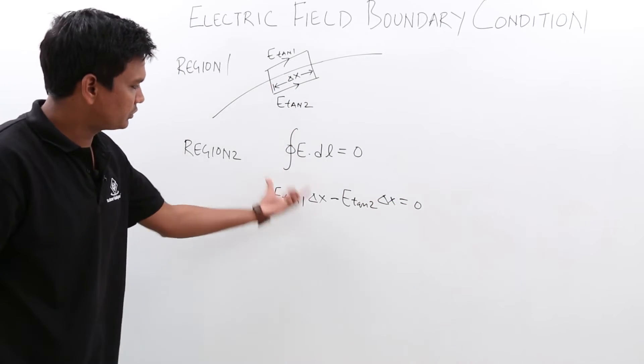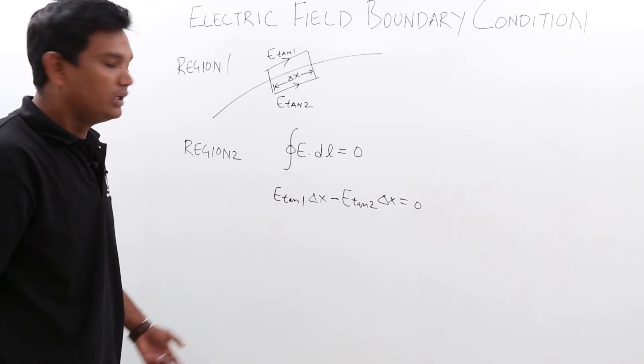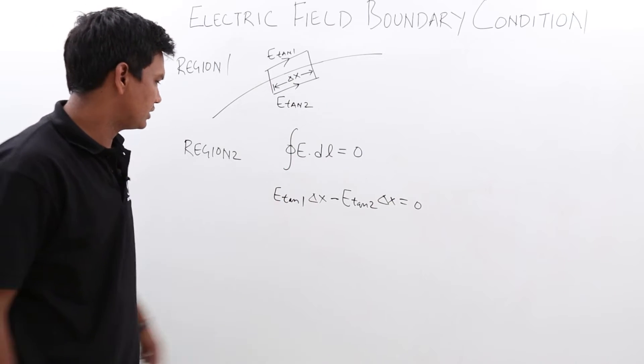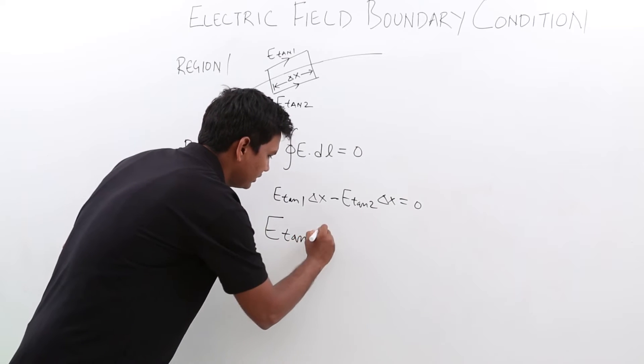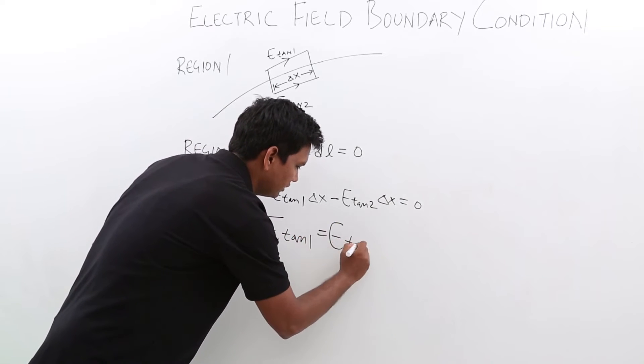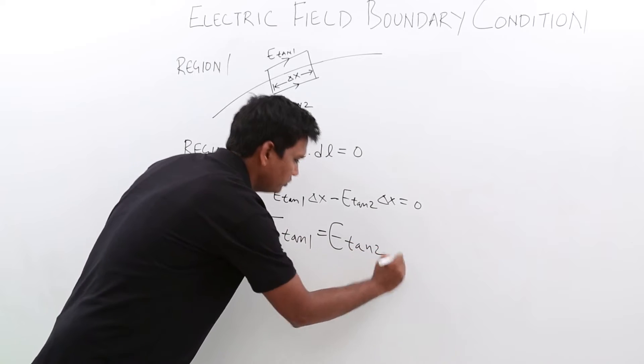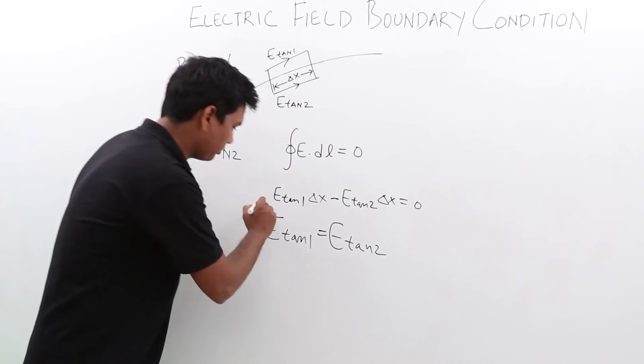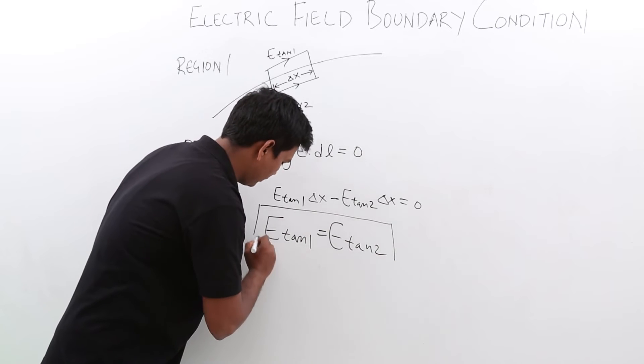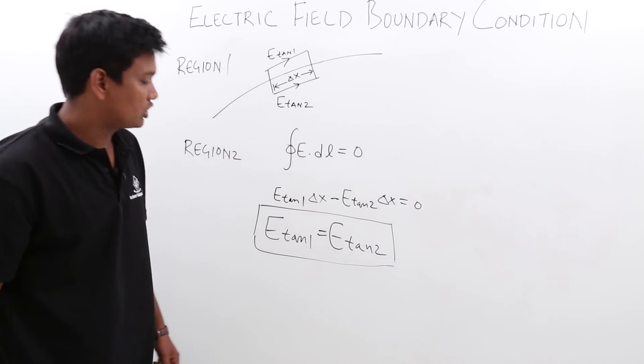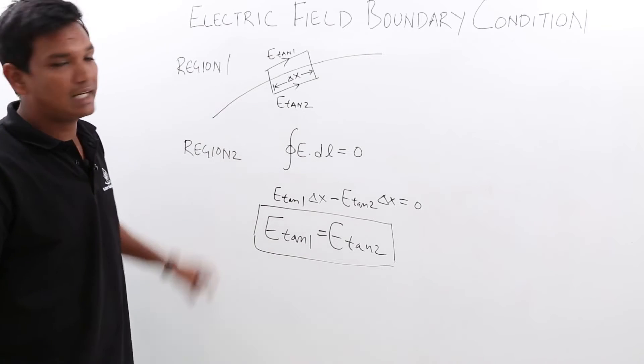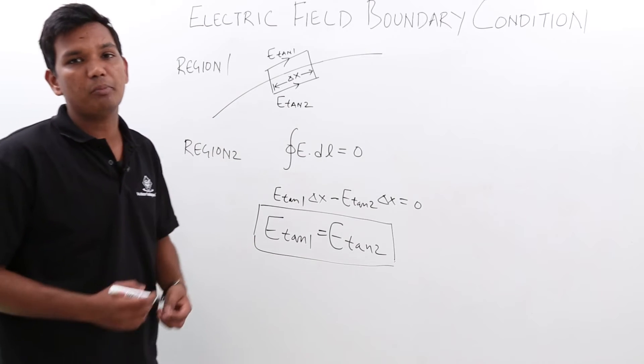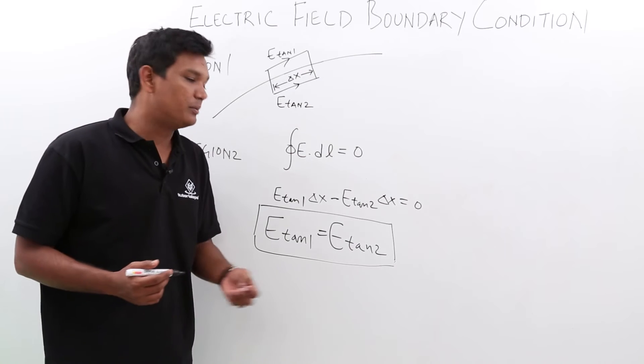From this equation we have written this. Equating this equation, can I say that E tan 1 is equal to E tan 2. So the tangential component in region 1 will be equal to the tangential component in region 2. In case of two dielectric medium, the tangential component in both the region will be equal.